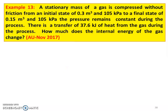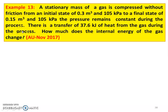Example number 13 from November 2017 question paper. A stationary mass of gas is compressed without friction from an initial state of 0.3 m³ and 105 kPa to a final state of 0.15 m³ and 105 kPa. Pressure remains constant, so initial pressure is 105 kPa and final pressure is 105 kPa — constant pressure during the process.